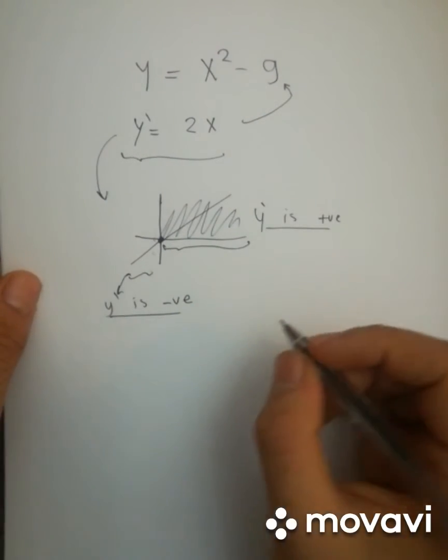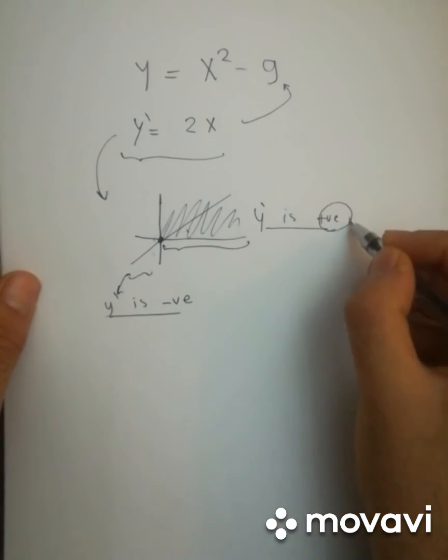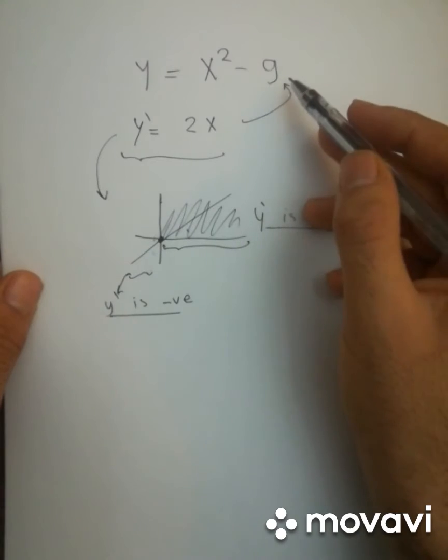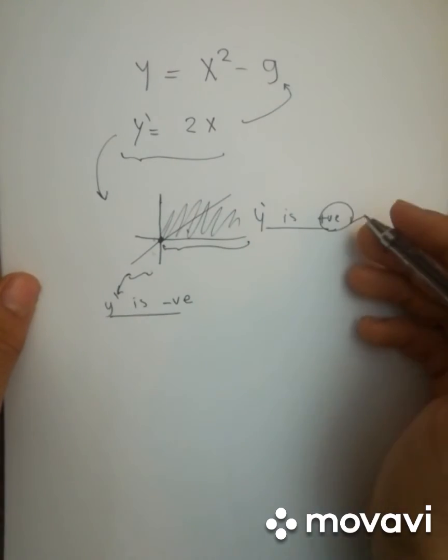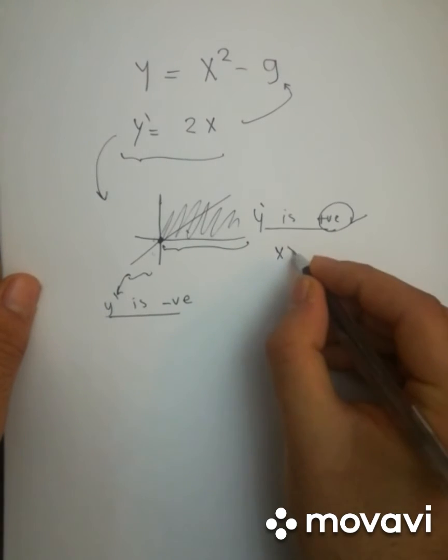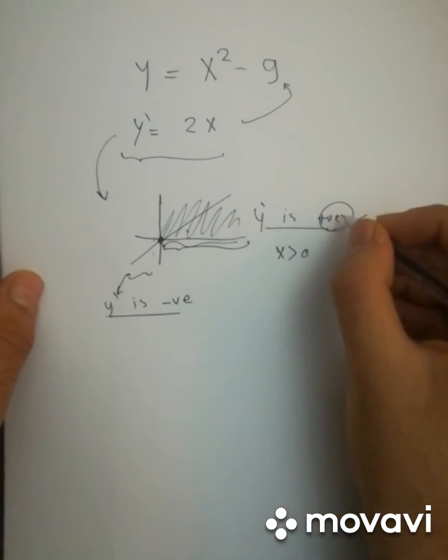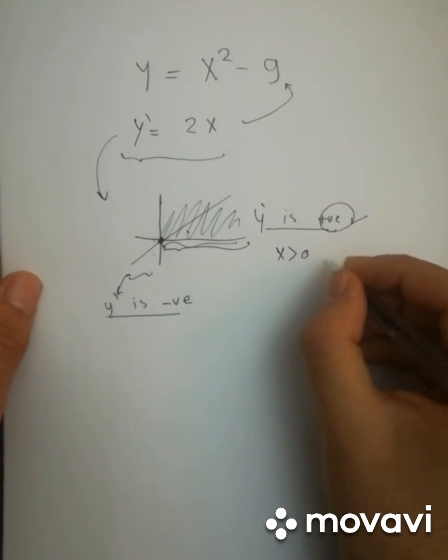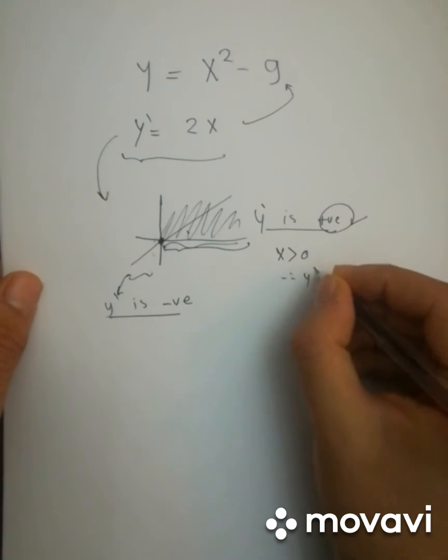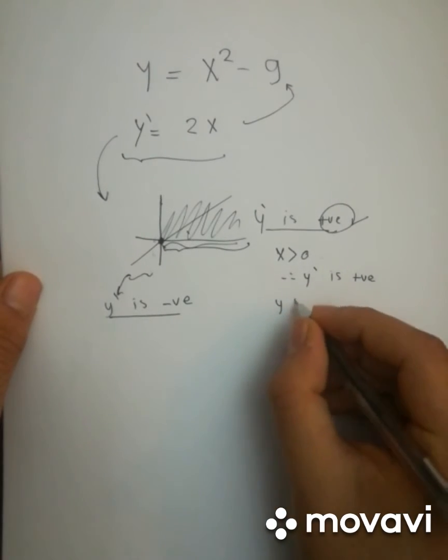Because the answer is, when the derivative is positive, that means the original function is increasing. So from x greater than 0 here, this interval, since the slope is positive, since y-dash is positive, y increases, its value increases.